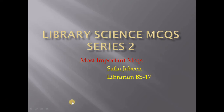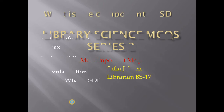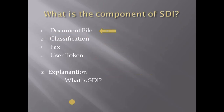Our first MCQ is: what is the component of SDI? The available options are: (1) document file, (2) classification number, (3) facts, (4) user token. SDI was originally a phrase related to library and information science. SDI refers to tools and resources used to keep a user informed of new resources on a specific topic.